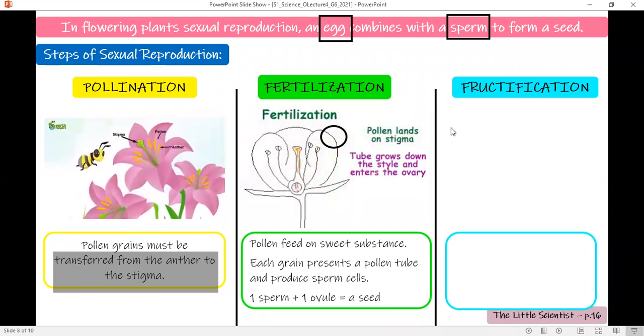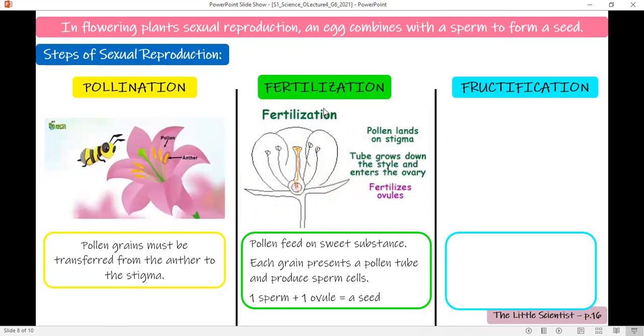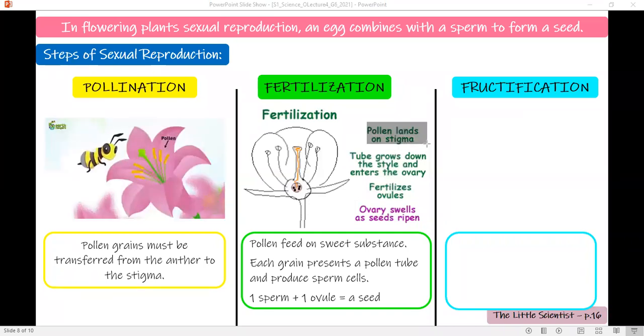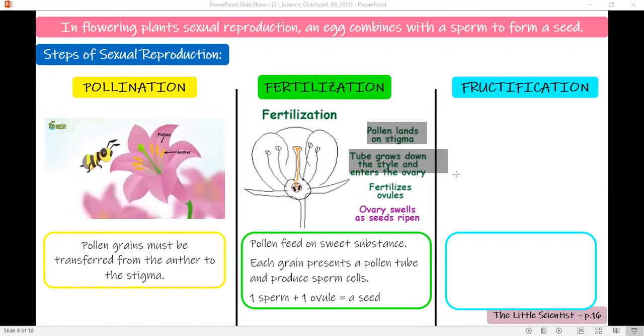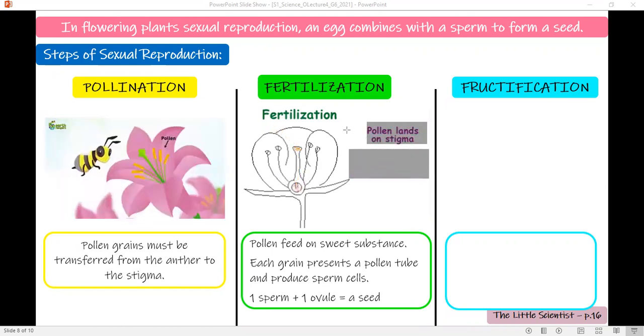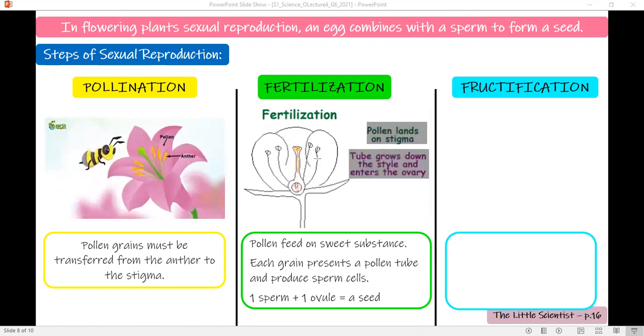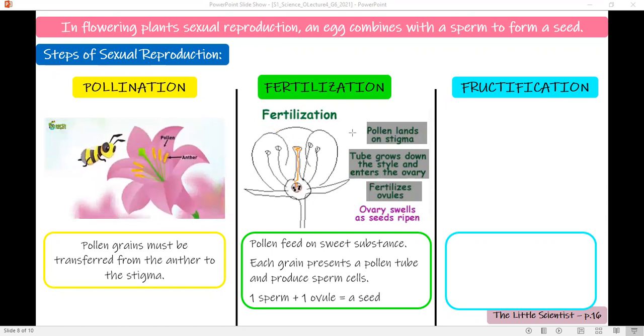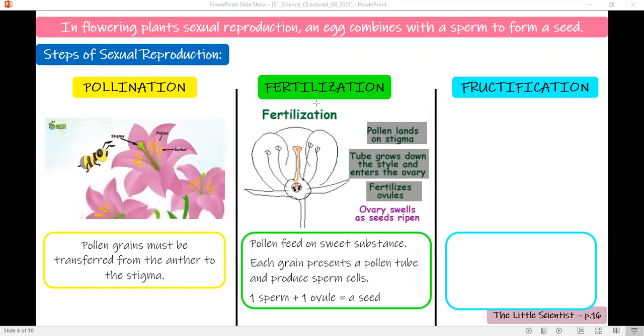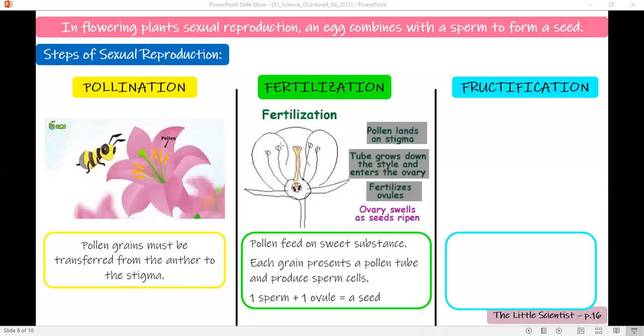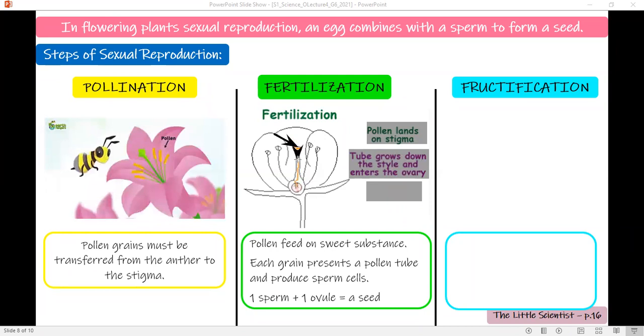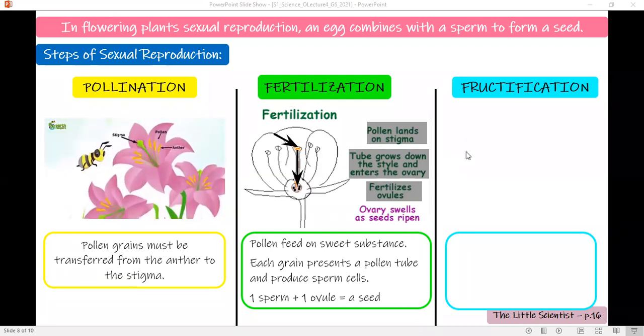At the end, I have here a diagram explaining in detail fertilization. Pollen landing on the stigma, then pollen tube growing and entering the ovary, then sperms fertilize ovules. We'll see it one more time. The pollen is taken to the stigma, a pollen grain presents pollen tube and releases sperms into the ovary. The sperms fertilize the ovules.